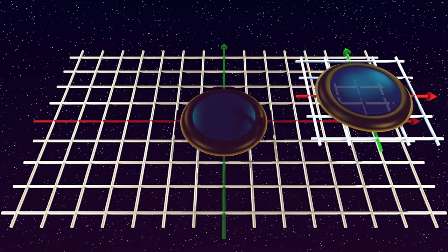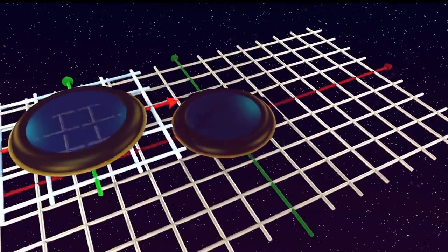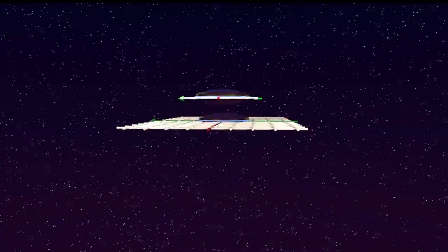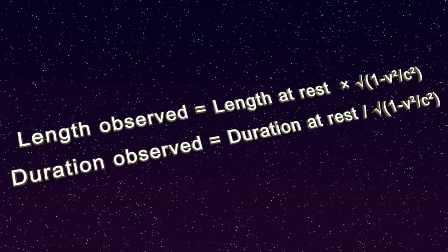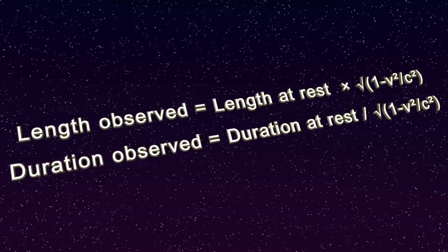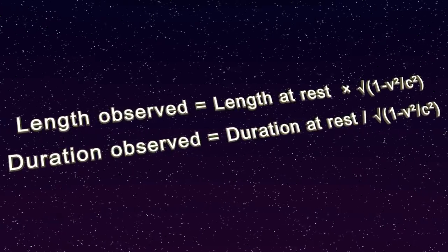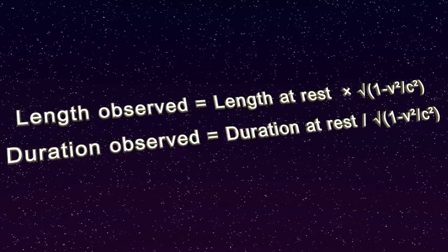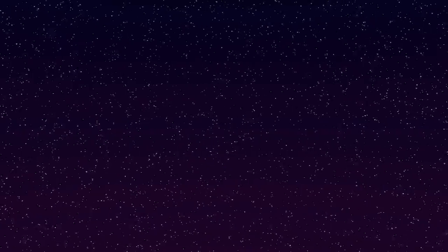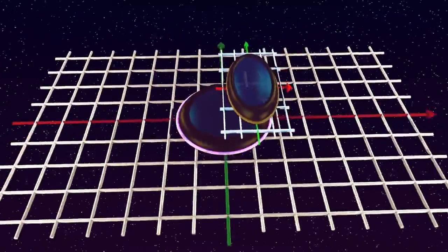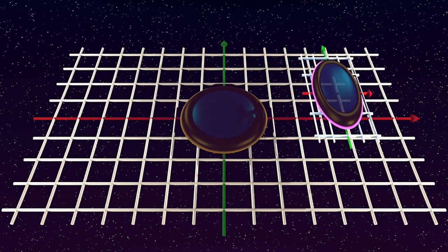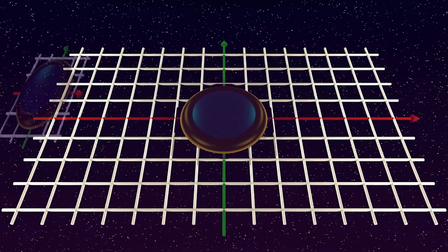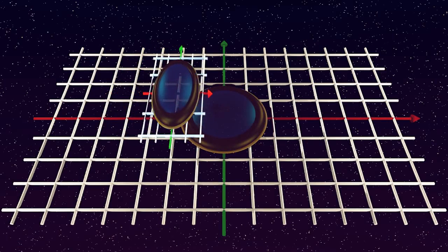But what do we expect to see when the moving lab zooms by at relativistic speed? The theory of relativity showed us that the stationary lab will see the moving clock slowed down by a factor exactly inverse to the factor of its length contraction. So we might think that what we should see from the stationary frame might look as follows: if the moving lab shrinks by a factor of two in the direction of motion, then the rate at which it flashes slows down by a factor of two.